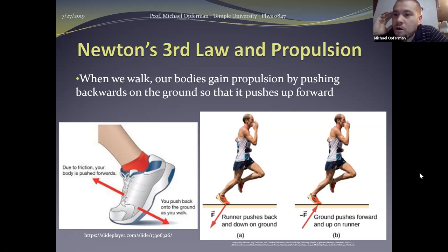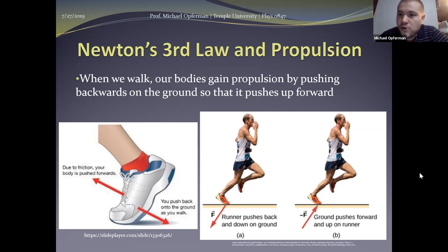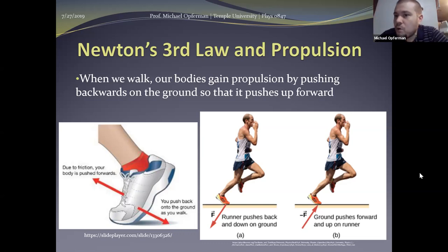A car stuck on ice can't get traction with the road, so the car can't exert a force on the road, and as a result the road doesn't exert a forward force on the car. The same is true for jumping in sports like basketball. What are you actually doing when you jump? At the most fundamental level, you're pushing the ground downward. The harder you push down on the ground, the harder the ground will push you up and launch you upwards. The way we move our bodies around involves how we interact with and push off of the world around us.